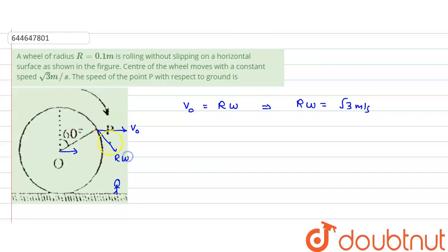This value would be equals to R omega. Now this value is due to the rotation, so basically it is a combined motion of translation plus rotation.